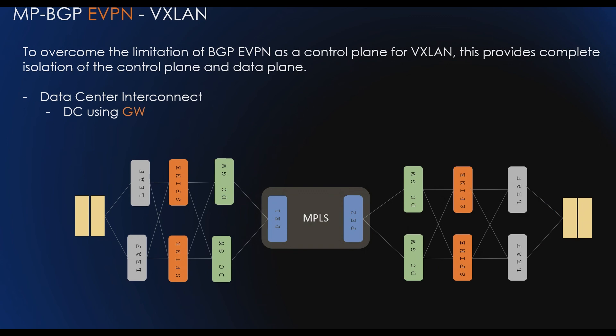Without EVPN, data center interconnect posed challenges due to Layer 2 traffic and limited traffic control options. EVPN provides a scalable and flexible solution for data center interconnect. When interconnecting data centers over WAN using a gateway, EVPN routes are terminated and processed at each gateway, and MAC/IP routes are re-advertised from data center to WAN and from WAN to data center. Unknown MAC and IP addresses are not re-advertised.